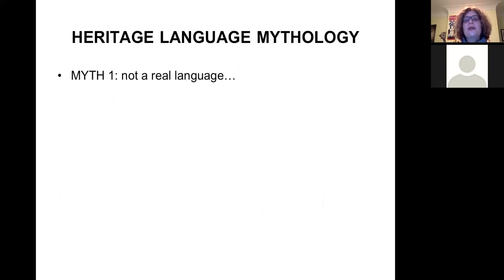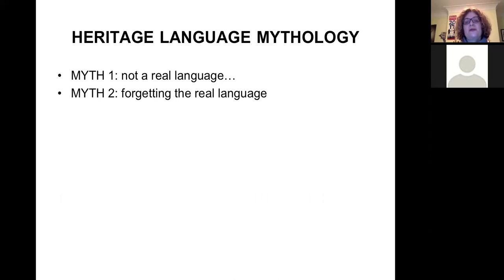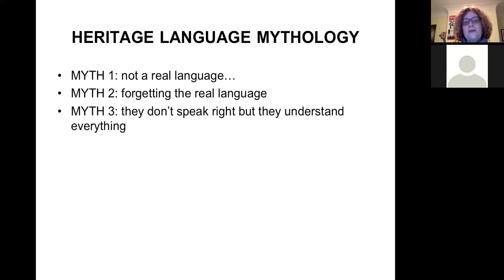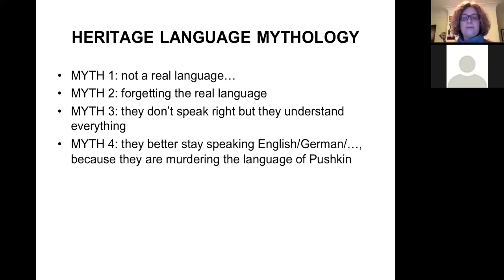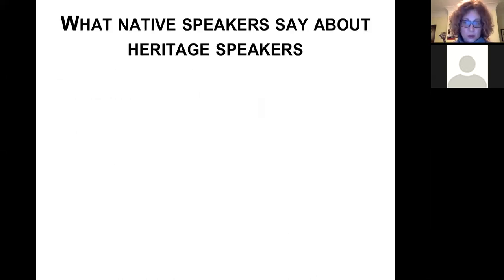There are a couple of urban legends about heritage languages that I want to talk about today and basically dispel. The first myth is: it's not a real language. The second myth is that they actually forgot the real language. The third myth is almost the opposite: they don't speak right, but they understand everything. And the fourth idea is that they'd better speak English or German because they're essentially murdering the language of Pushkin, and there's nothing we can do to make them any better. I want to look at these mythologies and give arguments against all of them.